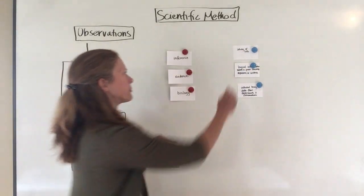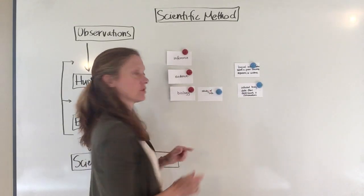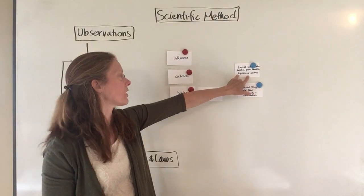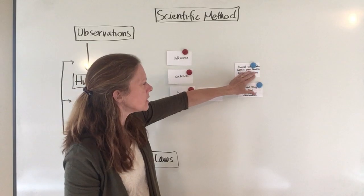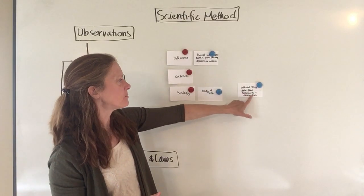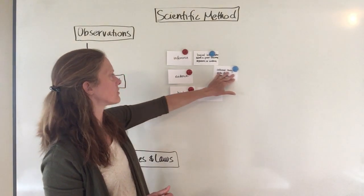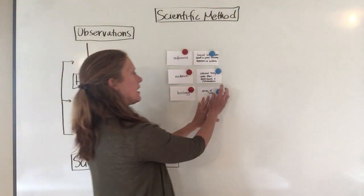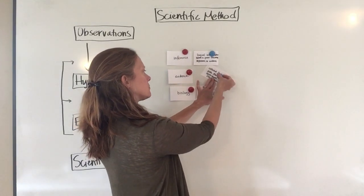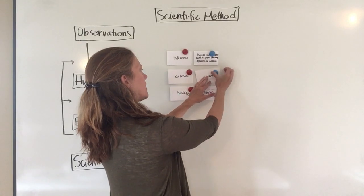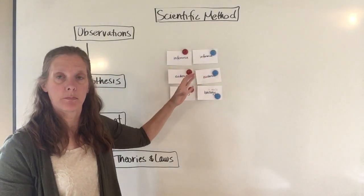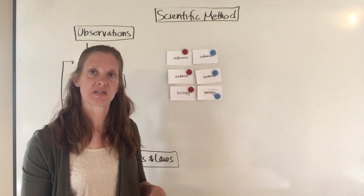'Study of life' goes with biology, so I move that card next to it. The next one says 'logical interpretation based on prior knowledge, experience, or evidence' — that should be 'inference.' 'Collected body of data from experiments and observations' matches with 'evidence.' Once you have them matched up, you flip the second card over to see if you were right. If you don't get them matched, you know you need to work a little harder on those definitions.